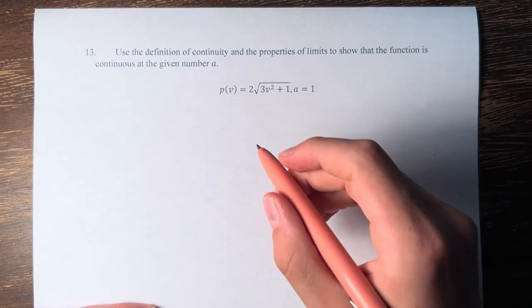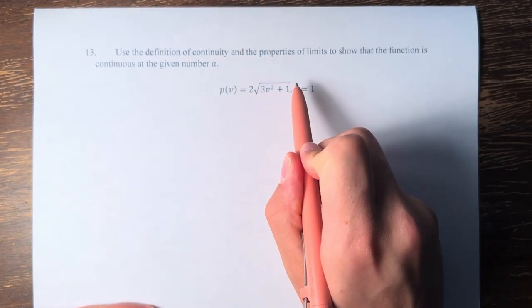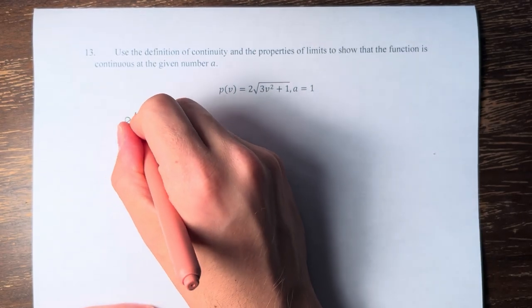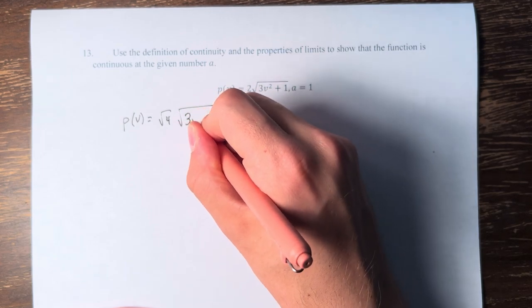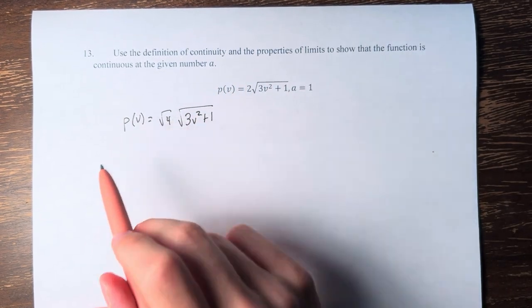So what we're going to do here is we're going to say p of v is equal to 2 times the square root of 3v squared plus 1. So we're going to write that as the square root of 4 times the square root of 3v squared plus 1, since 2 is the square root of 4.